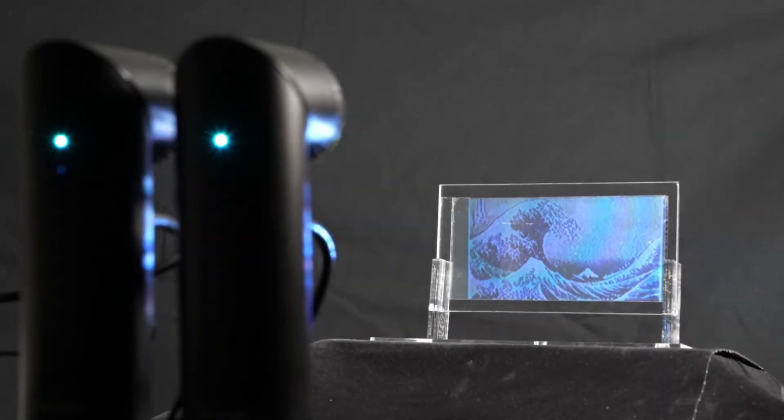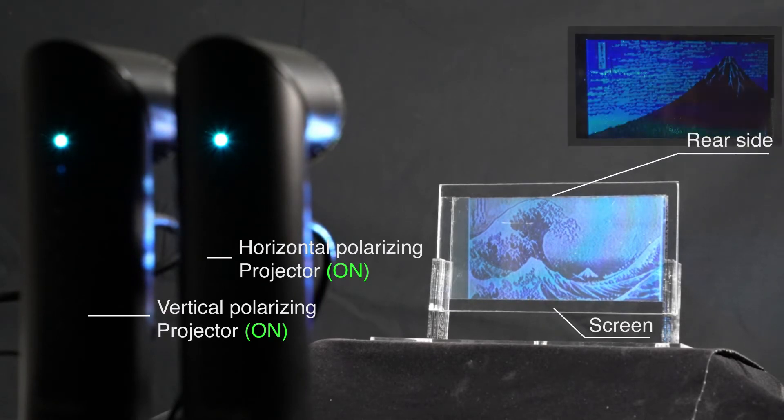We explain the configuration of the devices. First, two projectors are installed on the front of the screen. Each projector is equipped with a polarization filter. The left projector has a vertical polarization filter and the right projector has a horizontal one.